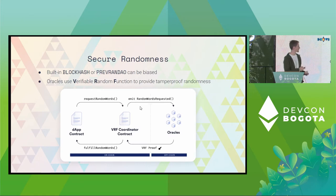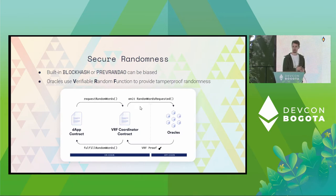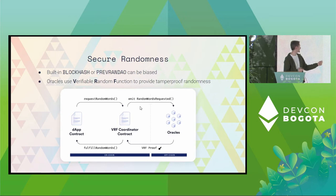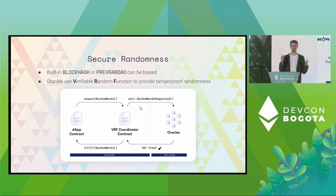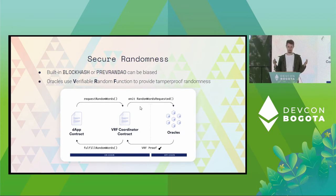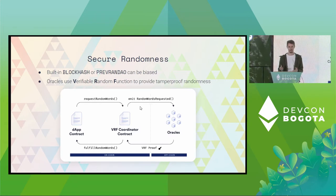The oracles will provide a cryptographic proof that they correctly evaluated the VRF, and send that proof to our coordinator contract, which can cryptographically verify it. If the verification succeeds, the coordinator can send the random output to the DApp contract, which can then run its lottery or whatever else. This is live today in production — there are over 1,400 unique contracts that have used this in the past 30 days.